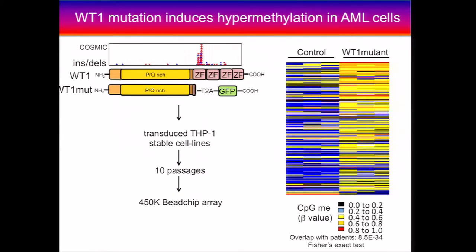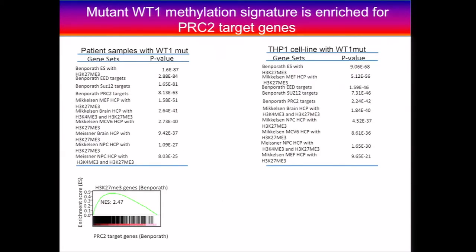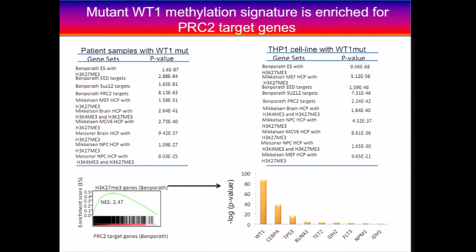Now we have these genes, and the next question is: what are these genes that WT1 mutation seems to preferentially methylate? GSC analysis shows that both in the TCGA patients as well as the THP1 cell lines, they are extremely enriched for PRC2 targets — these are genes with the H3K27 trimethylation marks. It's possible that all methylated genes would be enriched for PRC2 targets, so we compared the methylated genes associated with the different mutations. While you do see PRC2 enrichment for other mutations, the enrichment for WT1 is clearly off the charts.